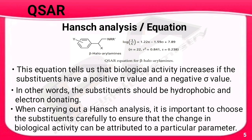From this equation, the first term has a positive value and the second has a negative value. This tells us that biological activity increases if the substituents have a positive pi value and a negative sigma value — in other words, substituents should be hydrophobic and electron-donating. When carrying out Hansch analysis, substituents must be chosen carefully so that changes in biological activity can be attributed to a particular parameter.